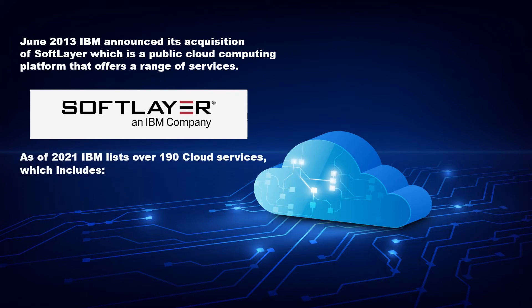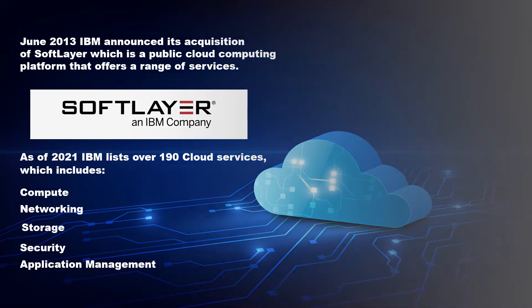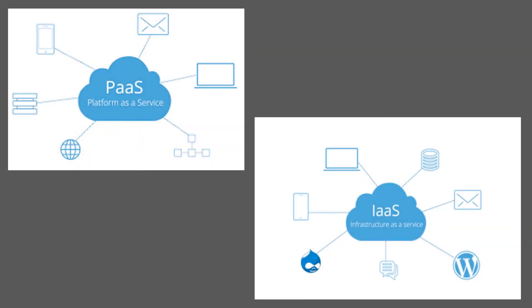As of 2021, IBM offers over 190 cloud services, which include compute, networking, storage, security, application management, and many more. IBM offers both Platform as a Service and Infrastructure as a Service. The platform scales and supports both small development teams and large enterprise businesses.